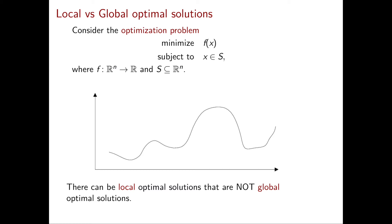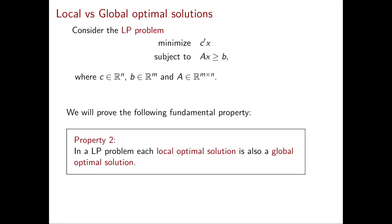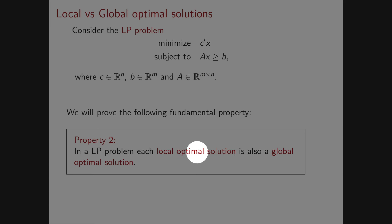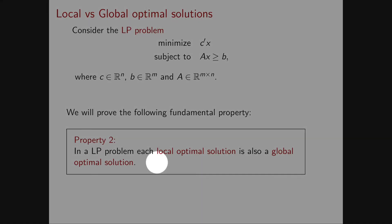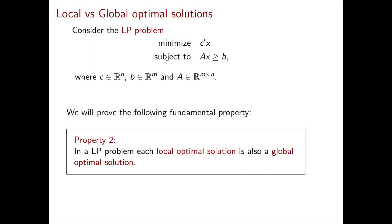So in this course, are we going to discuss local or global optimal solutions? Fortunately, in our setting we don't need to distinguish between the two. This is because of the next fundamental property of linear programming problems: every local optimal solution is also a global optimal solution. The reverse containment is obvious, so local optimal solutions and global optimal solutions coincide.